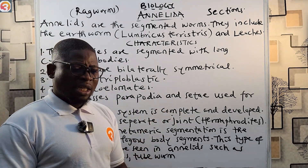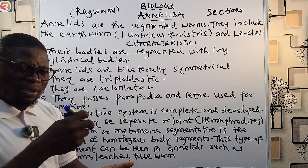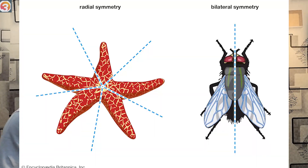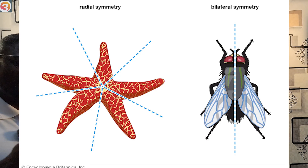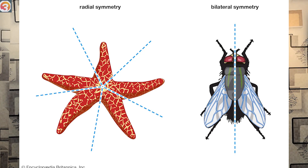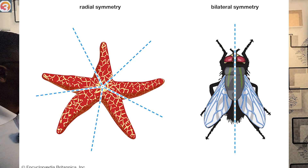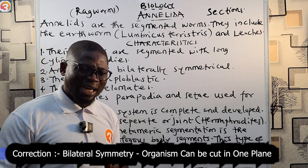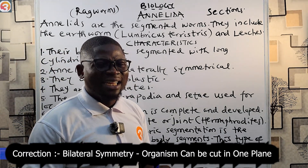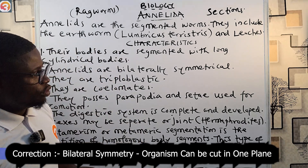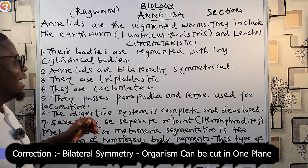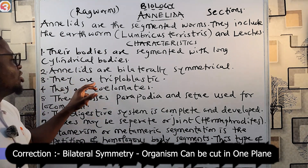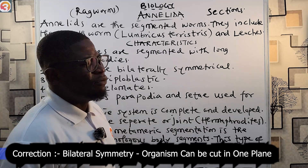Bilaterally symmetrical means their body can be cut in any plane or angle to give two identical halves. They are bilaterally symmetrical.